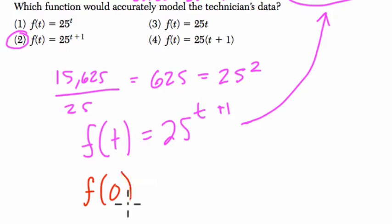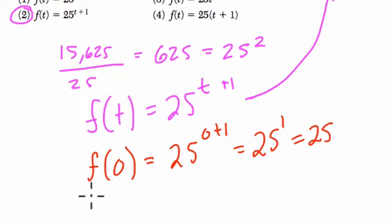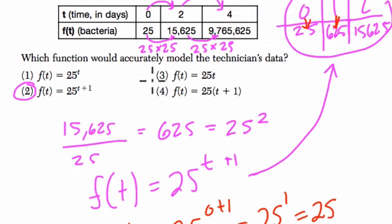f of 0, if we plug in 0, we get 25 to the 0 plus 1, that's 25 to the first, which is 25. So 0 gets to 25. It's working. f of 1 would equal 25 to the 1 plus 1, or 25 squared, which is 625. It works again. And then you can keep testing it. It will work for all of them. I also encourage you to try the other equations. None of them will match up.